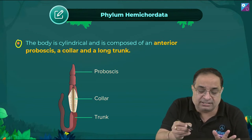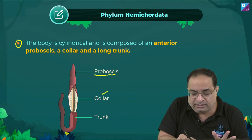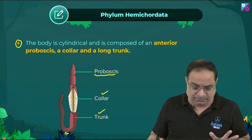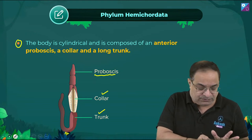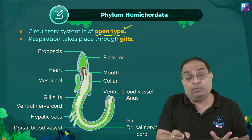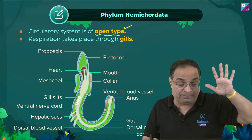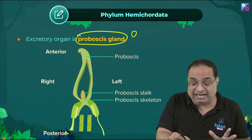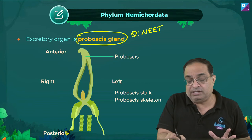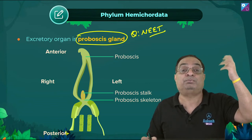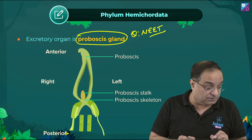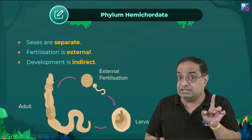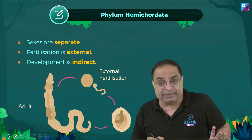The body of hemichordates is divisible into proboscis, collar, and trunk. Balanoglossus is the common example — also called ox tongue or tongue worm; Saccoglossus is another example. Circulatory system is open type. Gas exchange is by gills. Excretion is by a proboscis gland. Sexes are separate; fertilization is external; development is indirect with larval stages.